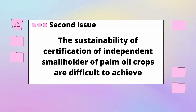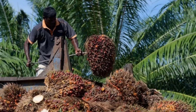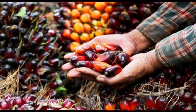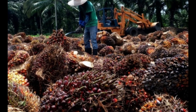The second issue is the sustainability certification of independent smallholders of palm oil crops, which is difficult to achieve. Independent smallholders in Malaysia face challenges to produce sustainable palm oil because of insufficient technical and financial support, lack of knowledge and training, and poor plantation management due to difficulties in obtaining certification.